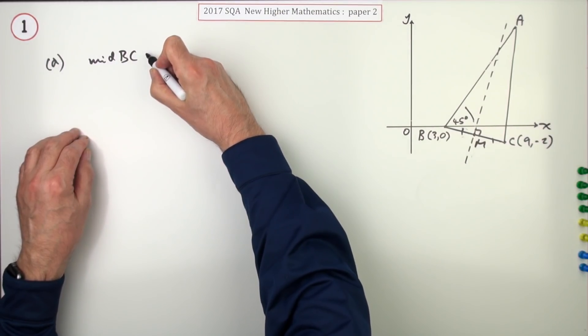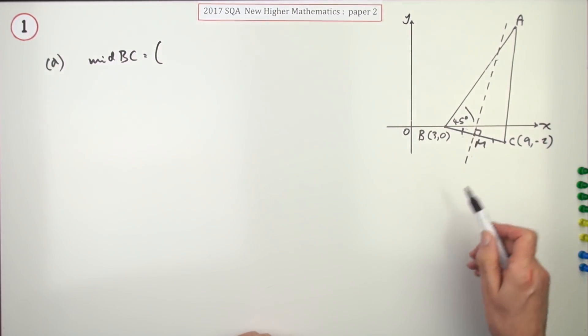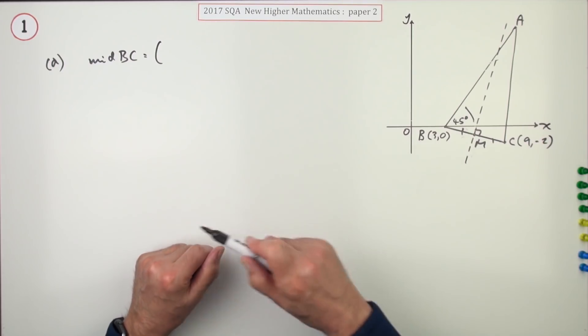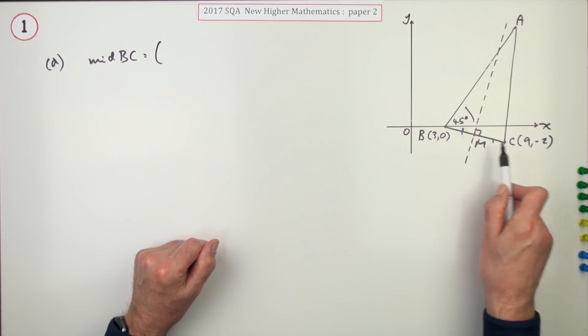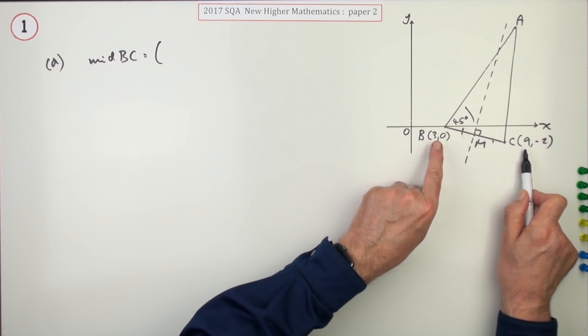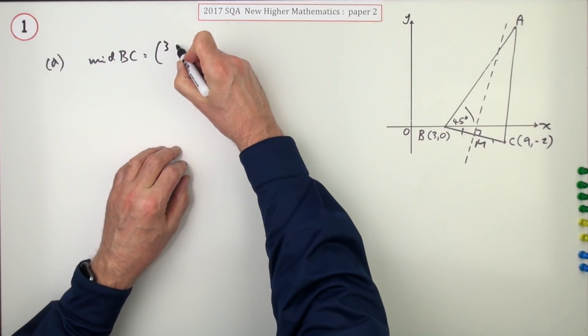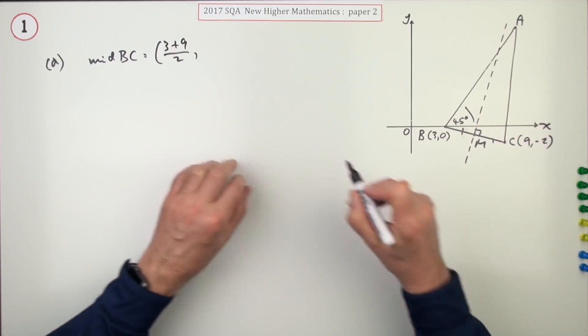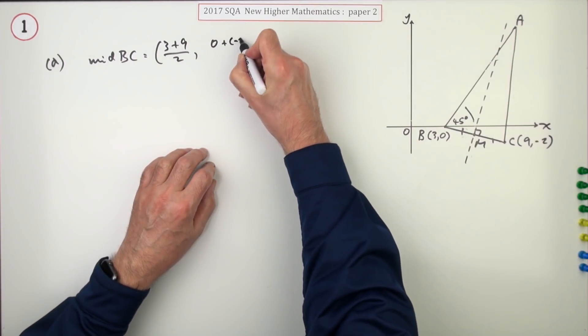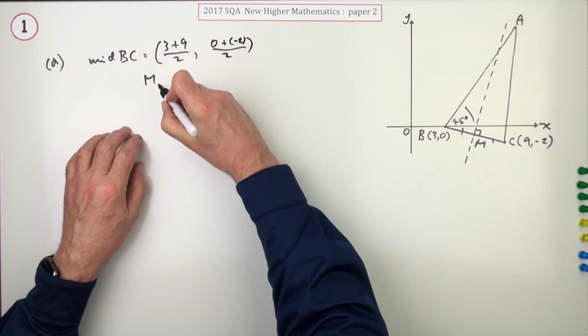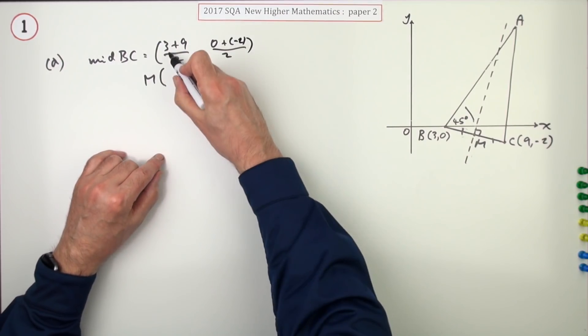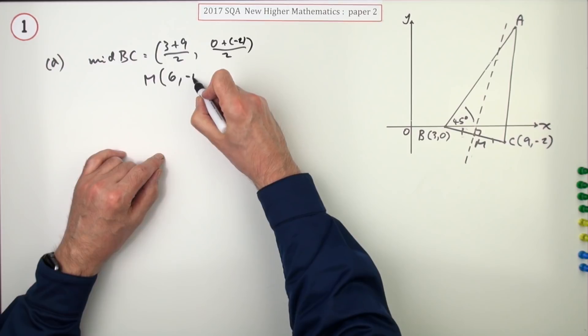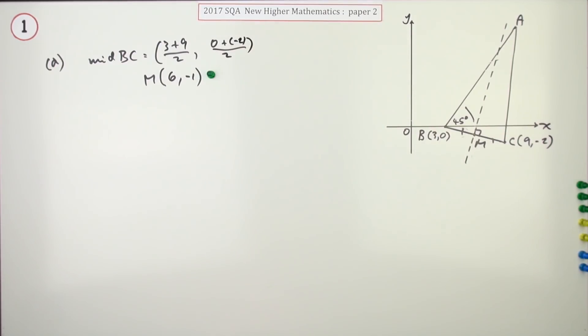So what is the midpoint of BC? The midpoint of BC will be the point which is halfway between them. If it's obvious you could just state it. If you wish to calculate it, you'll do that by finding the average of those coordinates. What's halfway between three and nine? That'll be (3 + 9)/2. What's halfway between zero and negative two? That's (0 + (-2))/2. So that's going to be the point, that'll be 6, and that'll be -1. Doing that gets the first mark.